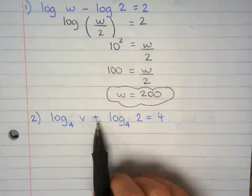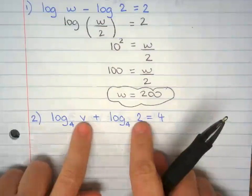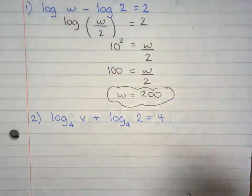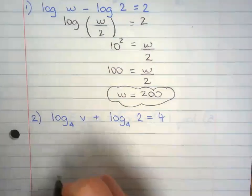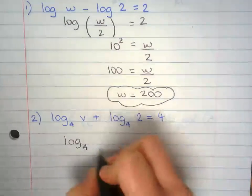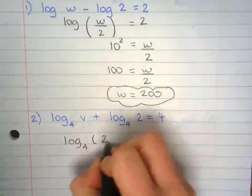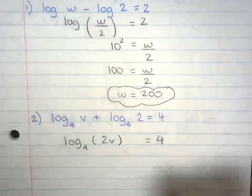Now we have addition here. That means we're going to multiply the arguments. So rewrite this: log base 4 of 2v equals 4.